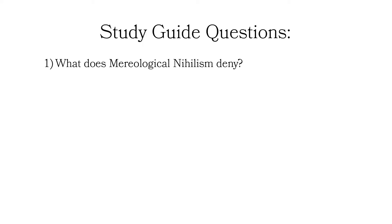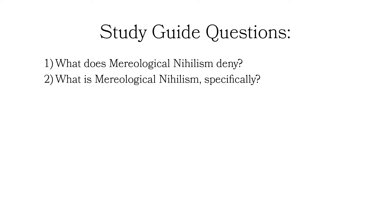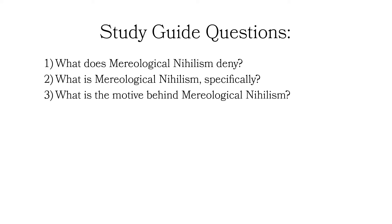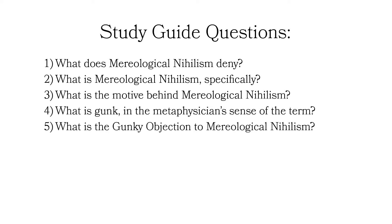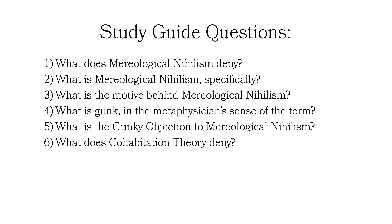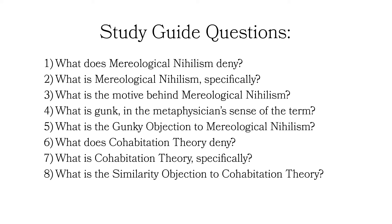Here are some study guide questions to help us get started. 1. What does mereological nihilism deny? 2. What is mereological nihilism specifically? 3. What is the motive behind mereological nihilism? 4. What is gunk in the metaphysician's sense of the term? 5. What is the gunky objection to mereological nihilism? 6. What does cohabitation theory deny? 7. What is cohabitation theory specifically? 8. What is the similarity objection to cohabitation theory?